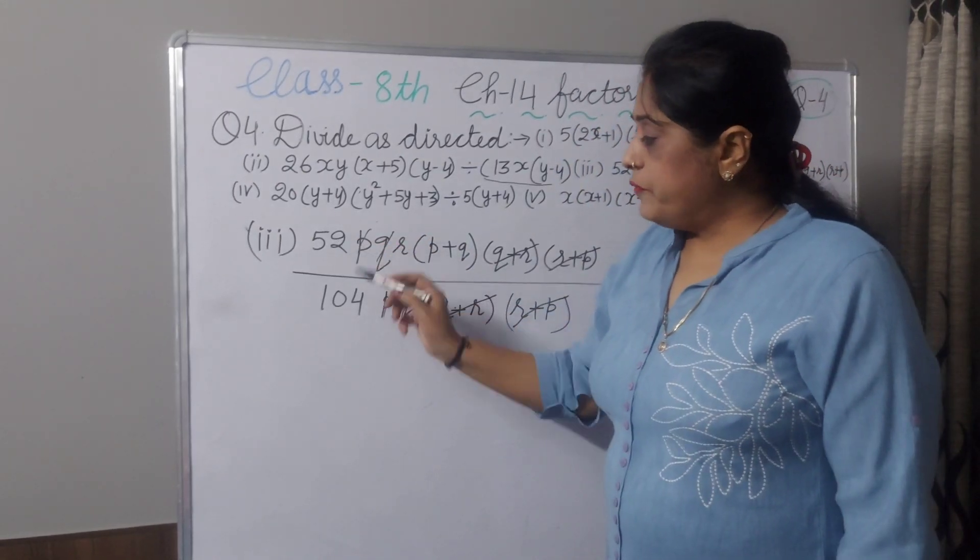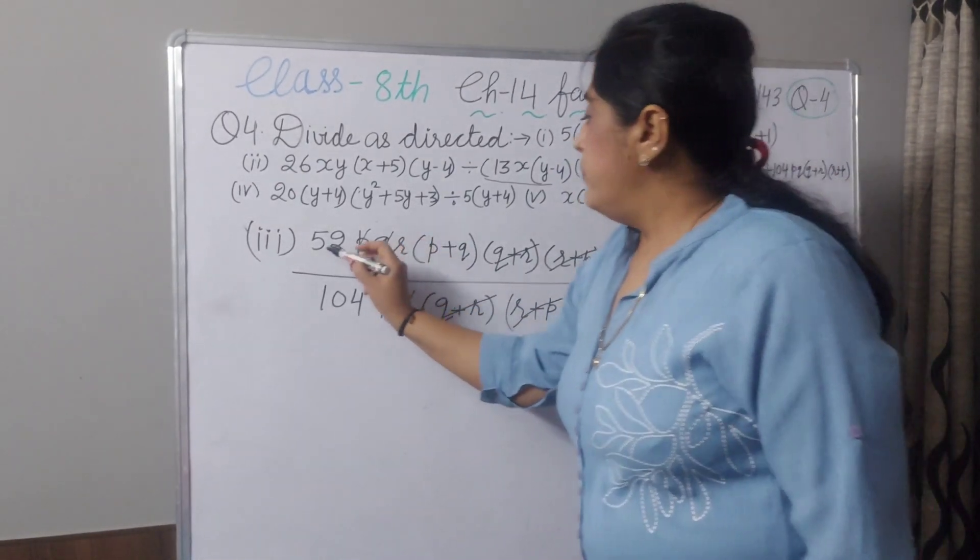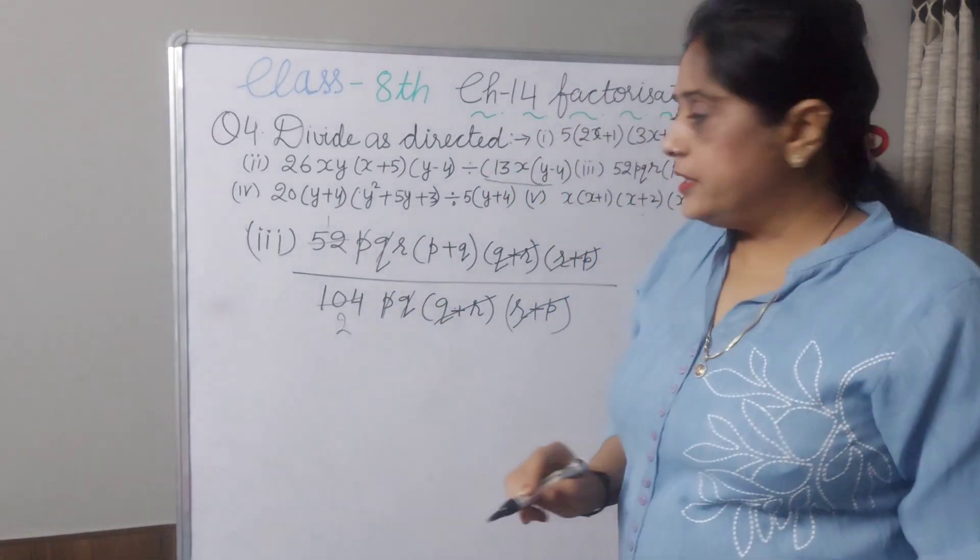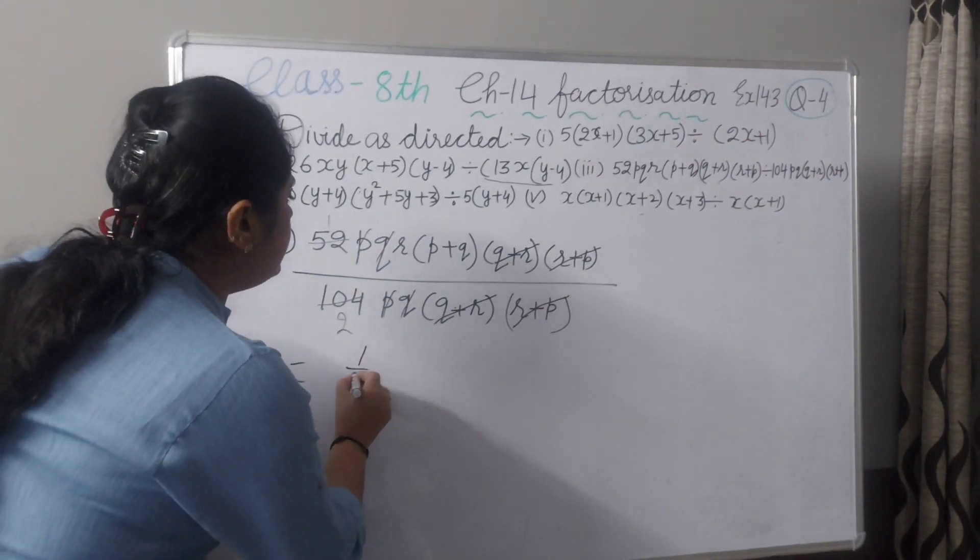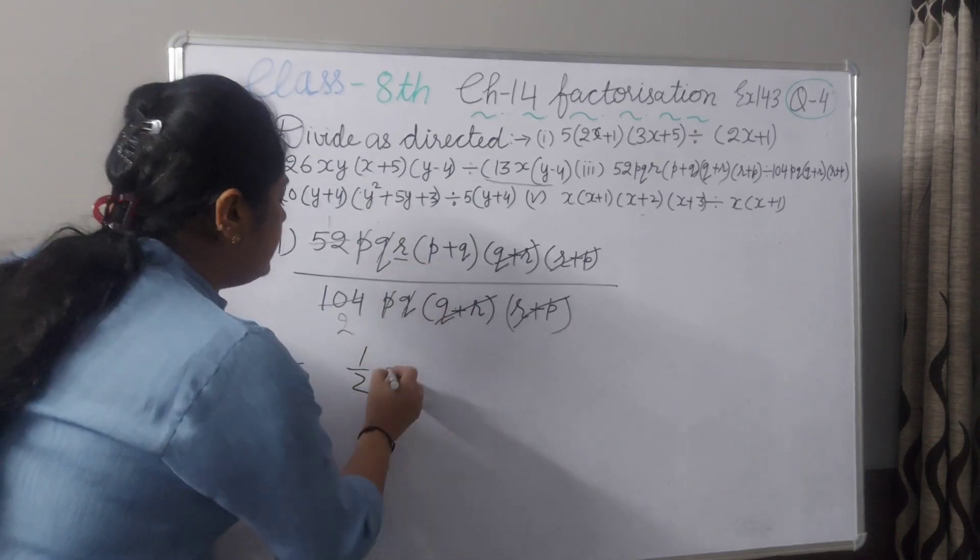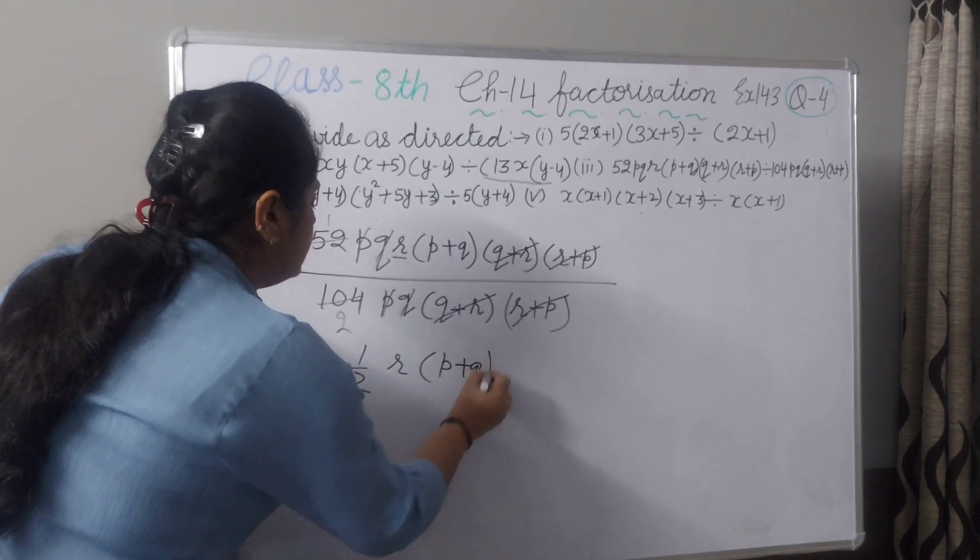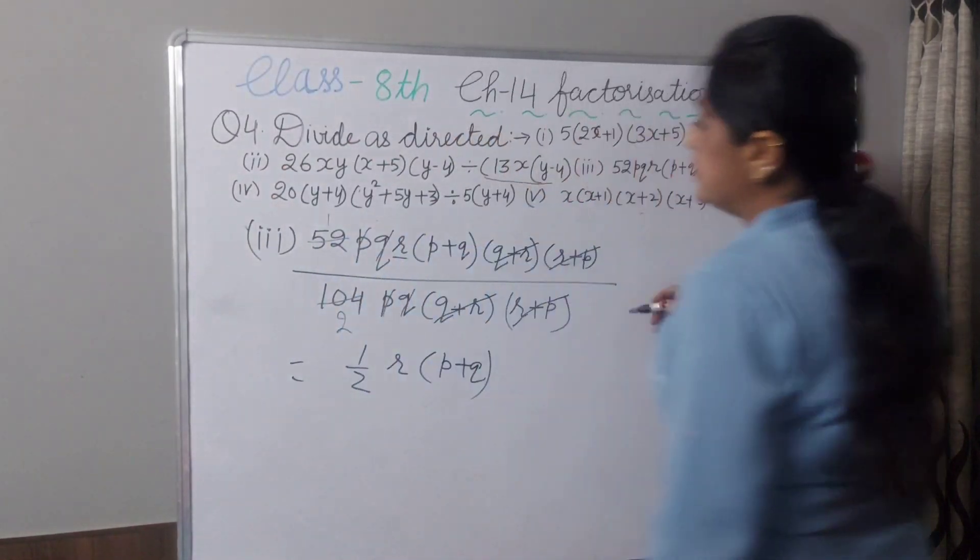Now, 52 and 104. 52, 1 and 52, 2. 104. What will be left with us? 1 by 2. Here r is left here. r into p plus q, that will be your answer.